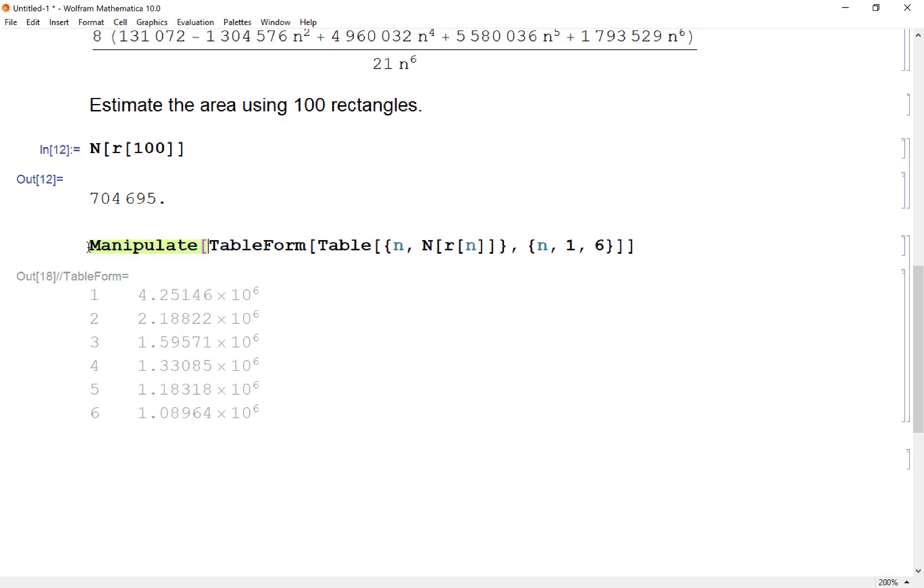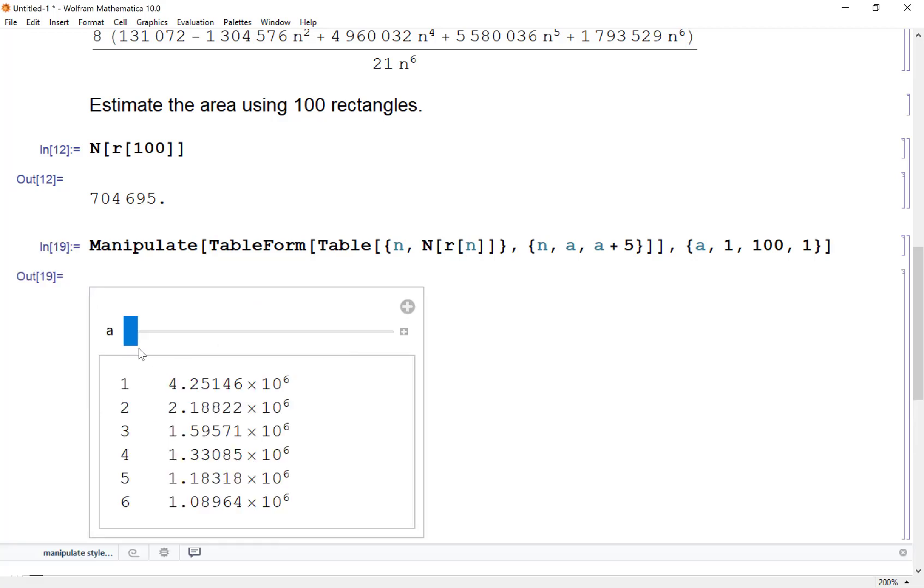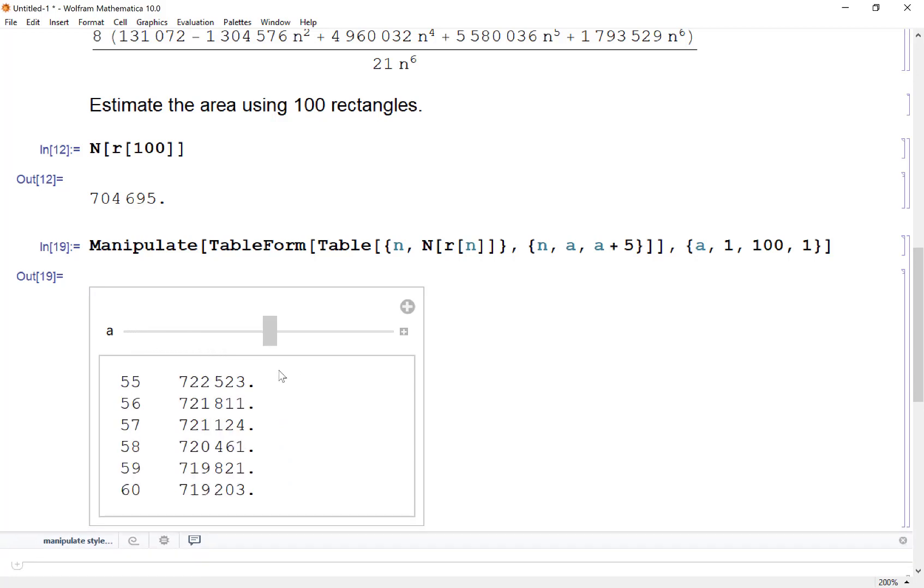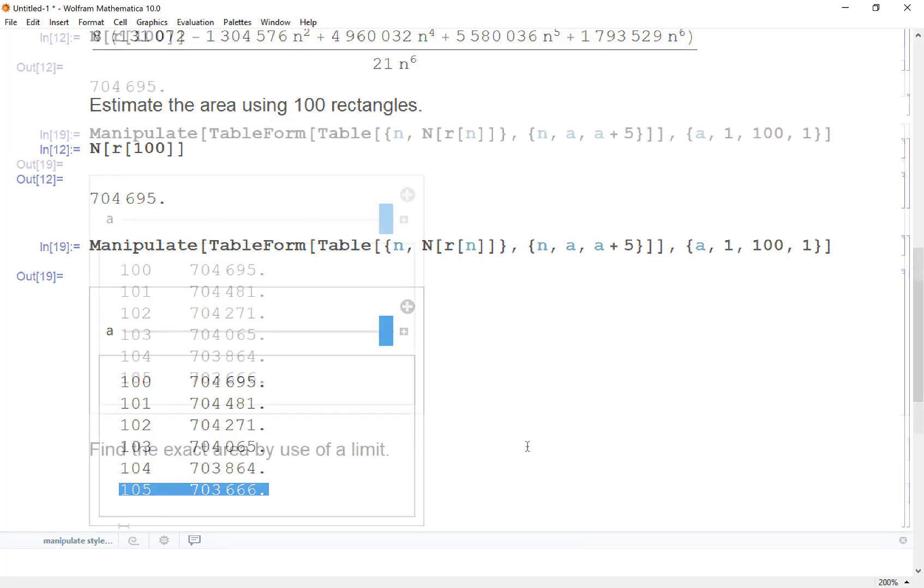But then I could also do something like this. I could say manipulate. And instead of going from one to six, let's go from a to a plus five. And that value of a is going to go from one to how about a hundred. And then I want integer steps. So I'm just going to add in another one here. And now I can see here the first six. The sixth row here is the area I'd get by using six rectangles under this curve. And as I drag it along, I'm filling it up. And here I get all the way down to a hundred up to a hundred and five. This would be if I used a hundred and five rectangles going from one to nine under this curve and added up all those areas.